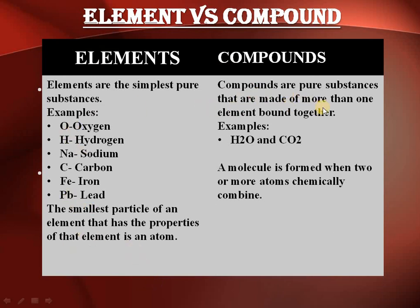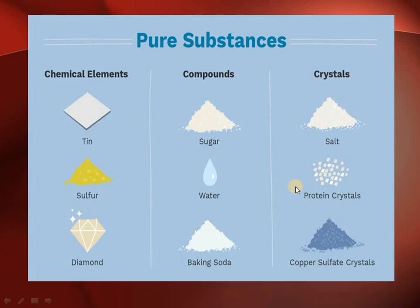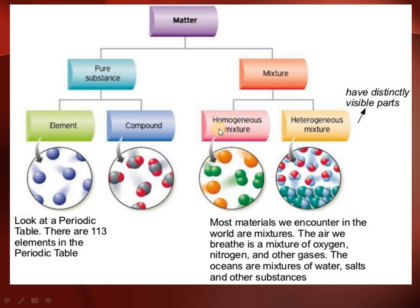Elements are simpler substances; compounds are pure substances made of more than one type of element. An element is the smallest particle that has the property of an atom, and a molecule is formed when two or more atoms combine chemically. Examples of compounds include water, sugar, baking soda, salt crystals, and protein crystals. An element consists of one type of atom; a compound is made up of two or more types of elements.